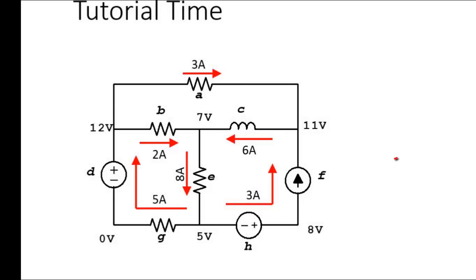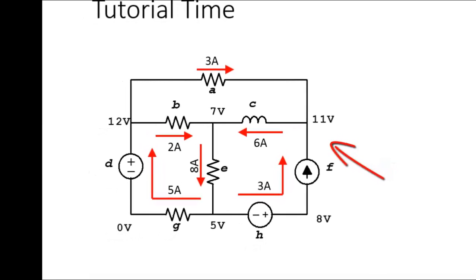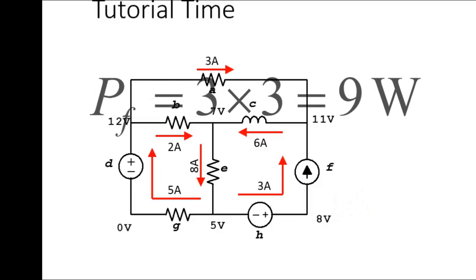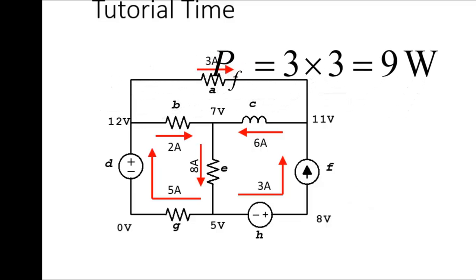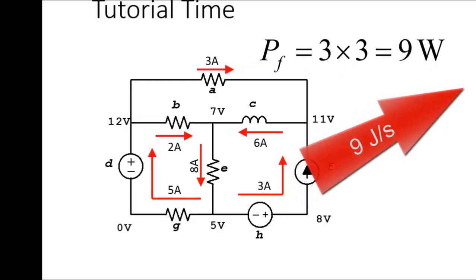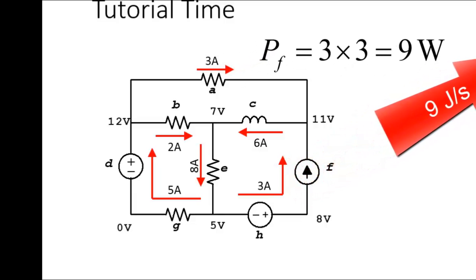Let's work now on the power of round element F. The top of F is higher than the bottom by 11 minus 8 — 3 volts. The current is flowing uphill. That is, coulombs arrive poor and leave rich — F is delivering power. How much power? VIP: 3 volts times 3 amps — that is 9 watts. F delivers 9 watts of power.